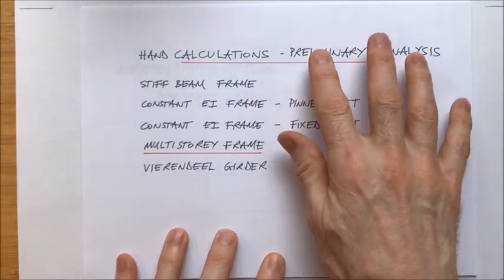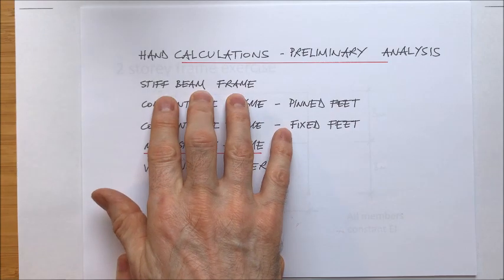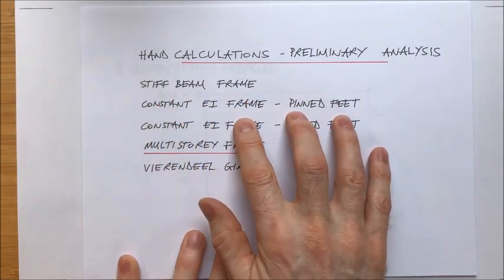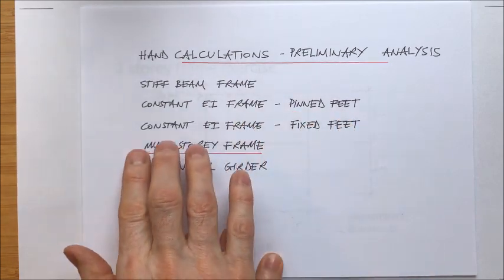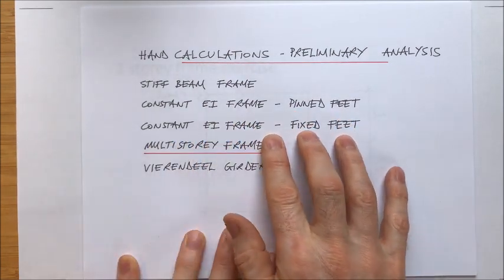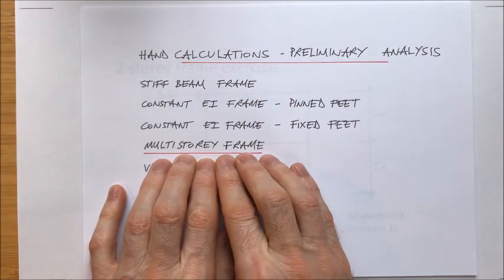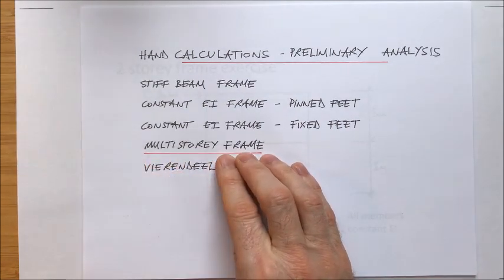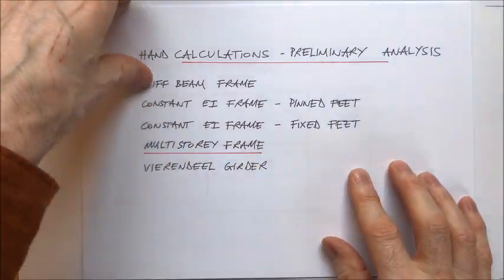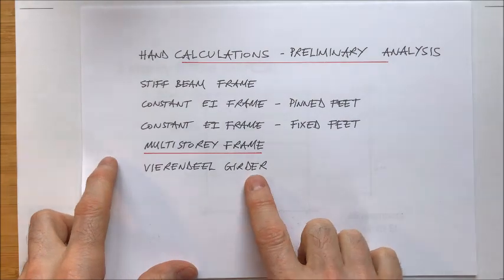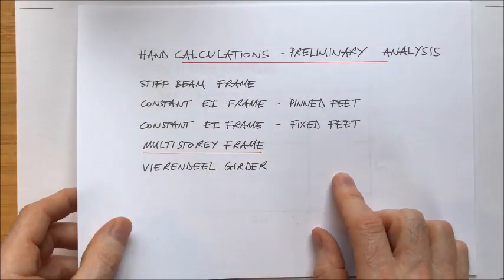So far in previous videos we've looked at a stiff beam frame, then frames with constant EI and pinned feet, single-storey frames, and then a single-storey frame with fixed feet. Now we're going to look at a two-storey frame and in the next video we can look at multi-storey frames. Eventually we'll get onto a Vierendeel girder, which is just a little bit trickier than multi-storey frames.